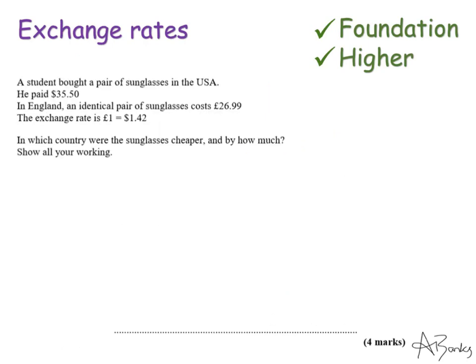Here's a slightly more difficult example, it's a bit more of a worded question. So this question says a student bought a pair of sunglasses in the USA, he paid $35.50. In England an identical pair of sunglasses cost £26.99. The exchange rate is £1 to $1.42. In which country were the sunglasses cheaper and by how much? Show all your work.